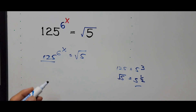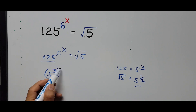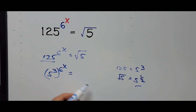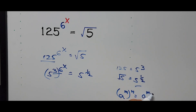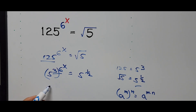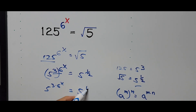The left side of the equation is now 5 cubed raised to the 6th power, to the power of x, equal to 5 raised to the 1/2 power. From here we'll be multiplying the exponents using the exponent rule: a to the n, raised to n, equals a raised to n times n. So this becomes 5 raised to 3 times 6, to the power of x, equals 5 raised to the 1/2 power.